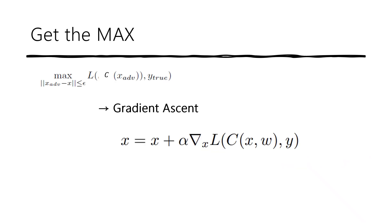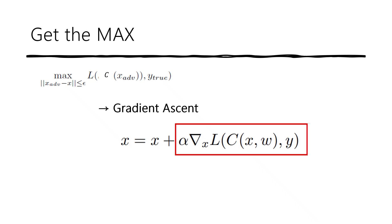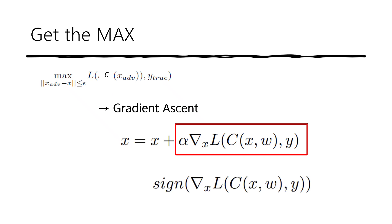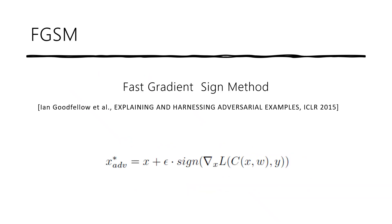In an ML model, we do gradient descent to minimize the loss. But here, since we want to maximize the loss, we can do gradient ascent. First, we get the gradient and add the learning rate portion of it to x. But we have a constraint: x needs to be changed within epsilon, which is a very small value. We could do it step by step, but since we want to do it fast, we just add the epsilon value to x in the direction of the gradient. So we get the direction of the gradient using the sign function, then multiply epsilon to it. That gives you the equation you saw in the beginning.